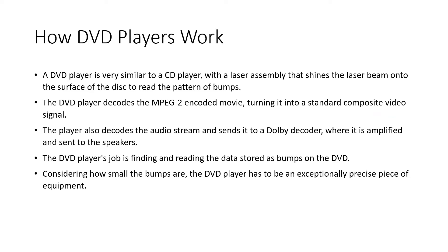A DVD player is very similar to a CD player, with a laser assembly that shines a laser beam onto the surface of the disc to read the pattern of bumps. The DVD player decodes the MPEG-2 encoded movie, turning it into a standard composite video signal. The player also decodes the audio stream and sends it to a Dolby decoder where it is amplified and sent to the speakers. The DVD player's job is finding and reading the data stored as bumps on the DVD.